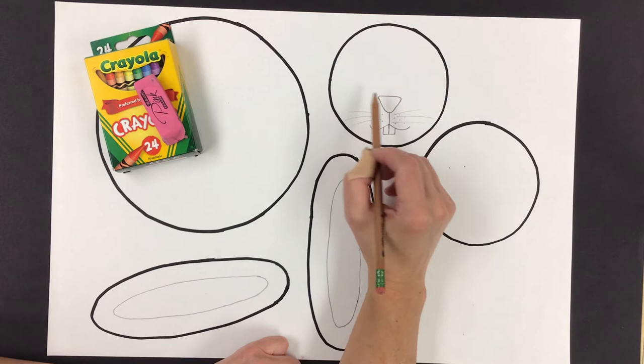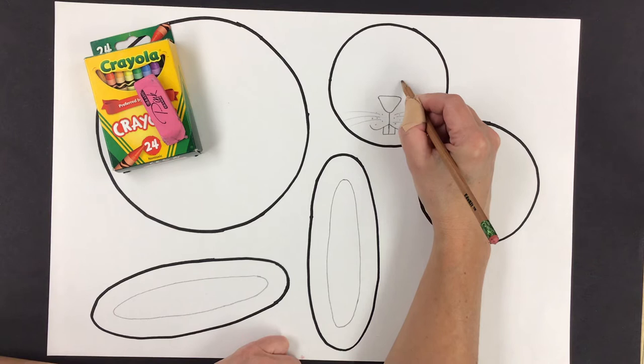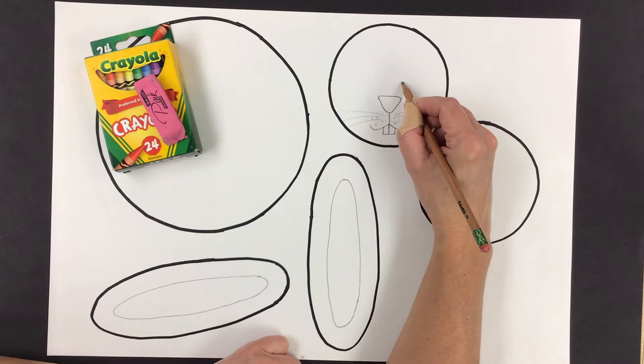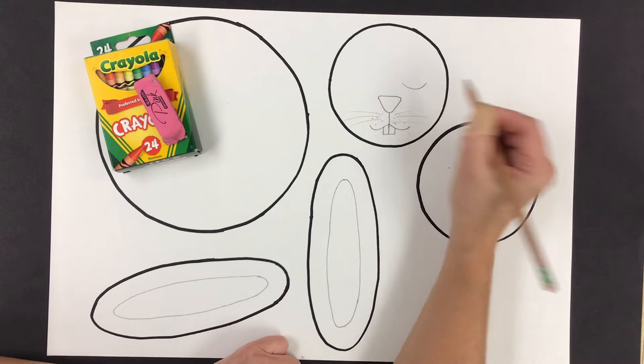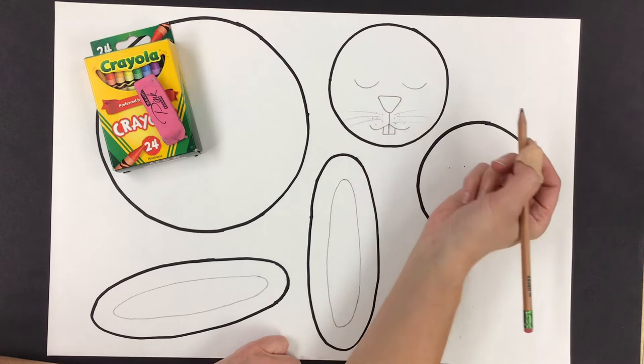To draw our rabbit's eyes, we're going to make the bottom first. Think about where the nose is. Go up from the side of the nose with your imaginary line and draw a smile line like this. Go up from the other side of the nose. Draw a smile line the same size on the other side.